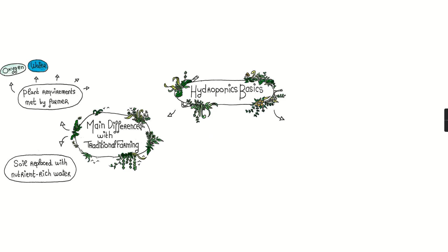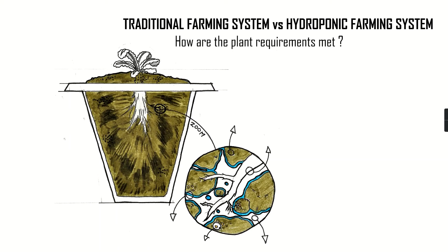These requirements include oxygen, water, nutrients, root support, and light. Let's quickly review two diagrams to see how these requirements are met in traditional farming versus hydroponic farming.